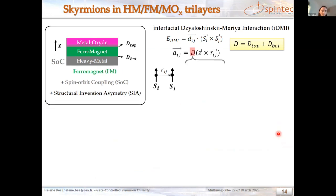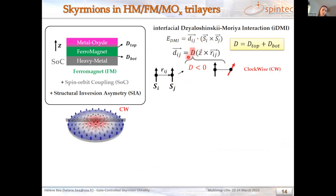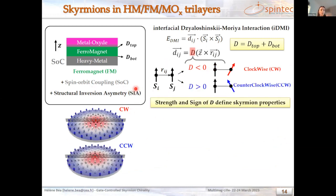Let's discuss the D coefficient. For a negative D coefficient, spins that are initially parallel due to Heisenberg exchange will start to rotate clockwise due to DMI, resulting in clockwise skyrmions. In the presence of a positive DMI, the contrary occurs. So the strength and sign of the DMI coefficient defines the chirality of the skyrmion and also its properties, such as its size, since DMI is important in the domain wall energy.